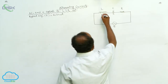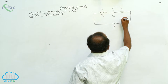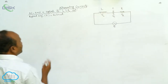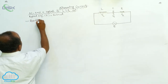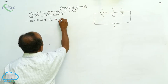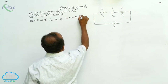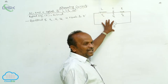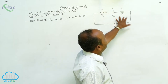What is the voltage across the inductor VL? What is the voltage across the capacitor Vc? What is the voltage across the resistance Vr? The resultant of Vl, Vc, and Vr is equal to E. If it is not AC current, we came to know that E is equal to Vl plus Vc plus Vr.